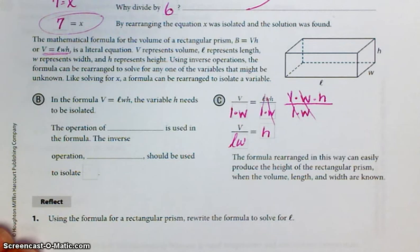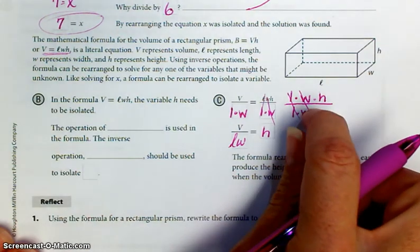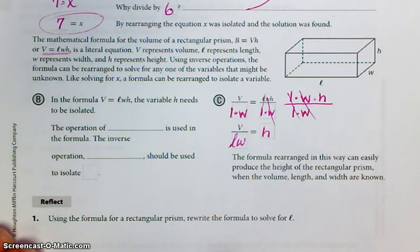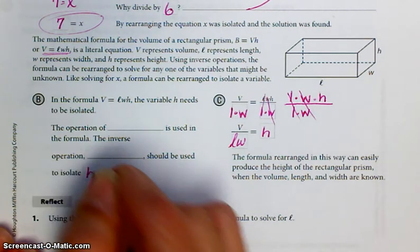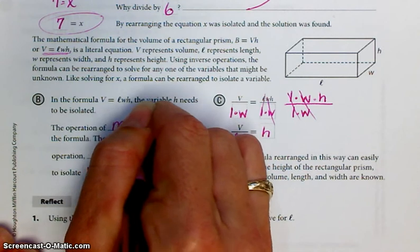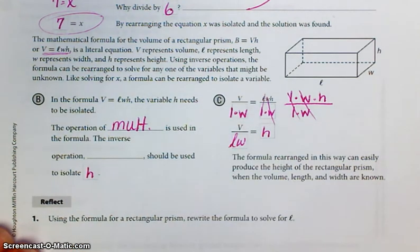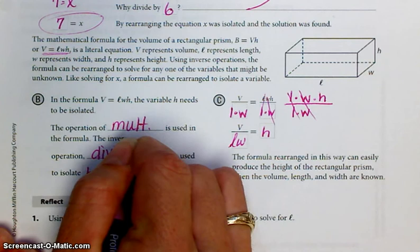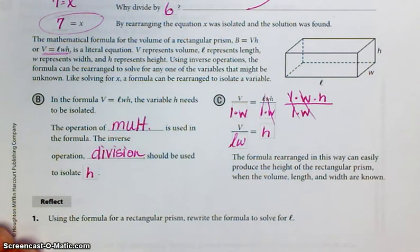The operation of multiplication is used in the formula. So the inverse operation, division, should be used to isolate h. The operation of multiplication was used in the formula, so the inverse operation, division, is used to solve for h.